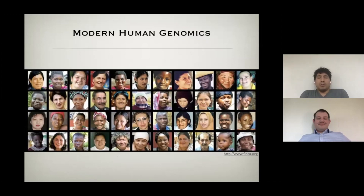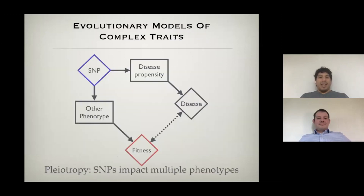We're then going to bring it all together and think about how demography and natural selection affect the genetic basis of complex traits. We're going to think about phenotypic variation within and across populations, and think about how we can describe evolutionary models that would represent those patterns of genetic variation. We know variants can affect multiple traits, and we know that some variants are going to be subject to natural selection, so we're going to think about how we can model patterns of genetic variation and what consequences they have for patterns of phenotypic variation.